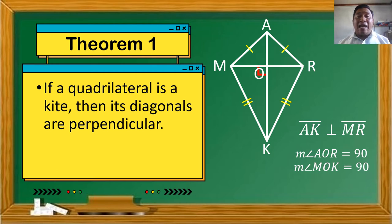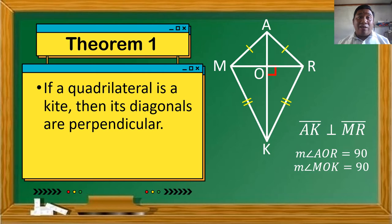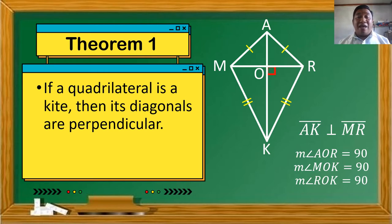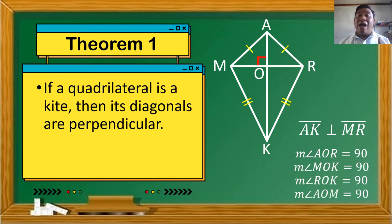Angle R-O-K is also a right angle because angle R-O-K and angle M-O-K form a linear pair — they are adjacent and supplementary, so their sum equals 180 degrees. Therefore, the measure of angle R-O-K is also equal to 90 degrees. And by the Vertical Angle Theorem, angle A-O-M is also a right angle, so the measure of angle A-O-M is 90 degrees.